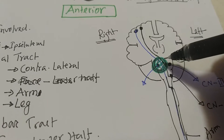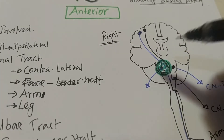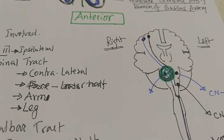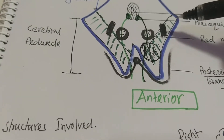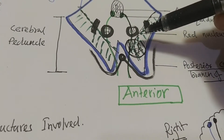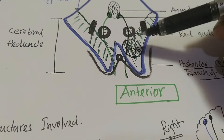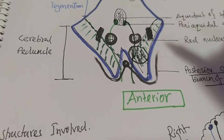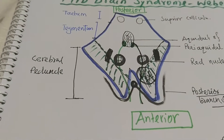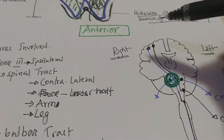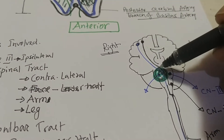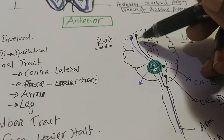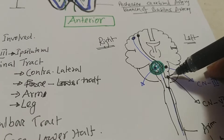This is the ipsilateral involvement of the third cranial nerve — meaning the lesion and the involvement are on the same side. The second structure involved is the corticospinal and corticobulbar tract — the long tracts which come from the cortex and go to the spinal cord and the bulbar part. The lesion involves the corticospinal tract going to the spinal cord and the corticobulbar tract involving the bulb.